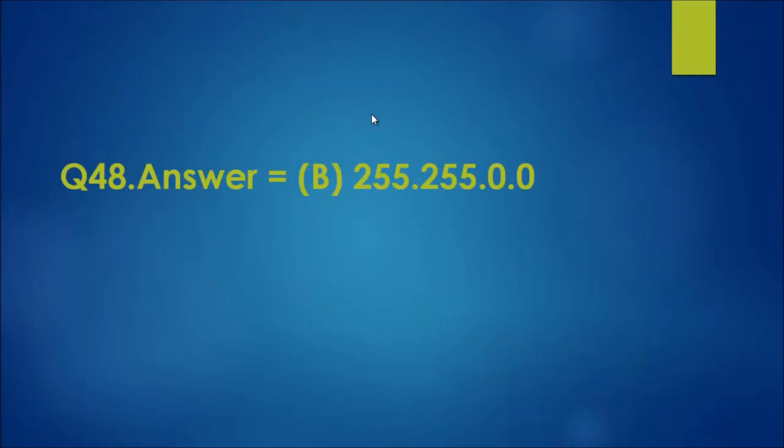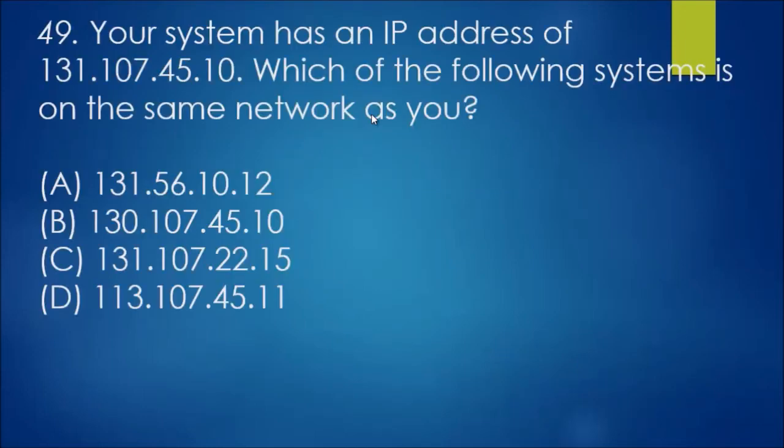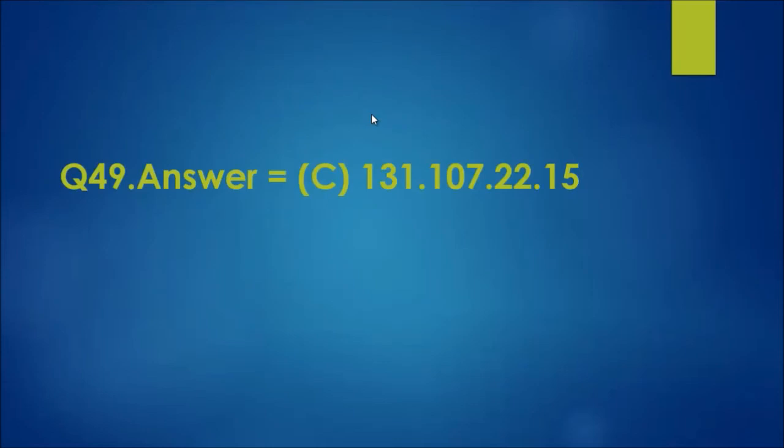Question 49: your system has an IP address of 131.107.45.10. Which of the following systems is on the same network as you? Again, we're going to look at what class we are in. It is class B because we're past 127 once again. So two, the first two octets have to be exactly the same. If we look at our list, C looks the most likely, so that is the answer.